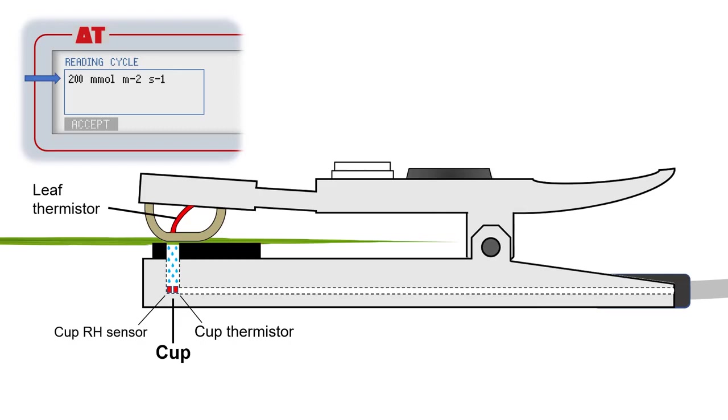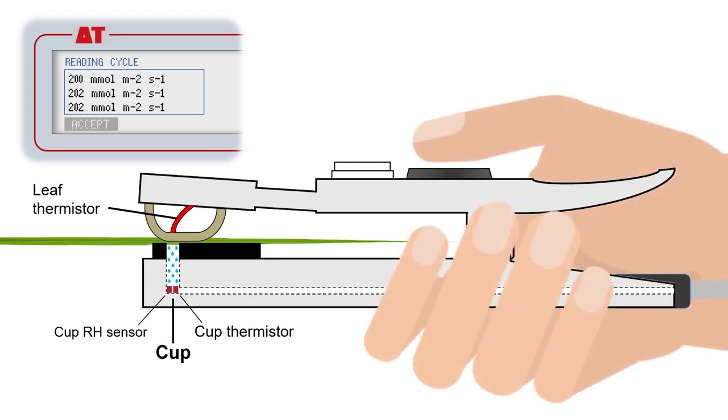After each measurement, dry air is pumped from the body of the AP4 into the cup, resetting humidity levels, and a new measurement cycle starts. This two-step cycle continues briefly until a consistent leaf conductance reading has been established, signified by a double beep. The user can then accept the reading by pressing the button on top of the sensor head.